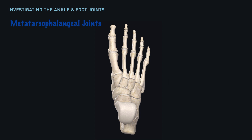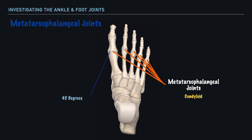Next, we have the metatarsophalangeal joints, which represent the articulation between the phalanges and the metatarsals, classified as condyloid joints. Specifically at the great toe, we'll find the widest variability in motion — it's common to see flexion at 45 degrees and extension at 70 degrees. At the metatarsophalangeal joints of the lesser toes, it's typical to see 40 degrees of flexion and 40 degrees of extension, with minimal abduction and adduction occurring as well.